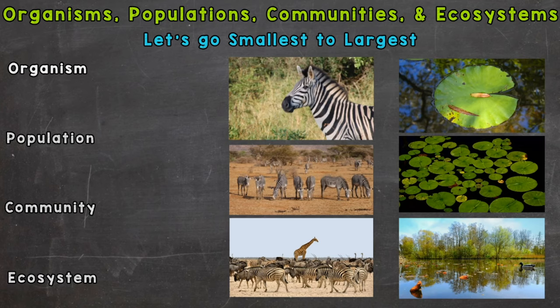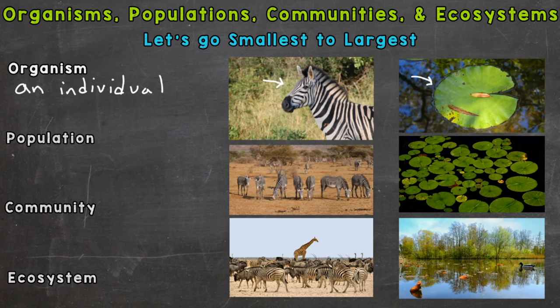So let's start with organism. An organism is an individual — one single living thing. Sometimes you'll see organism referred to as an individual. So for our examples, we have one single zebra or one single lily pad. A single living thing for organism or individual.